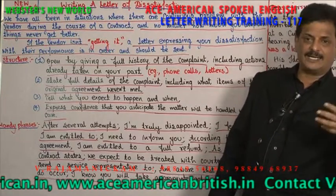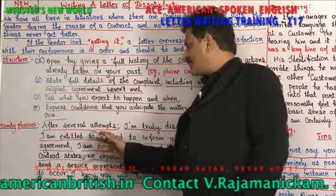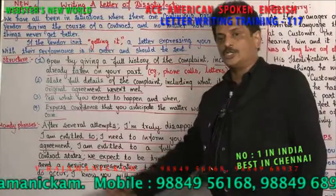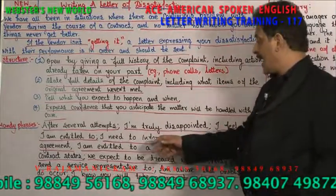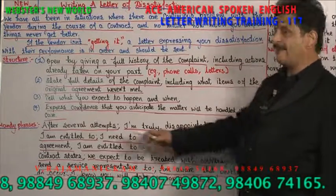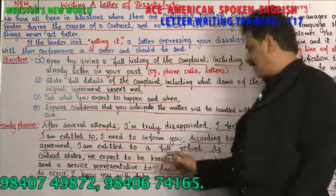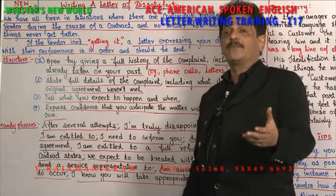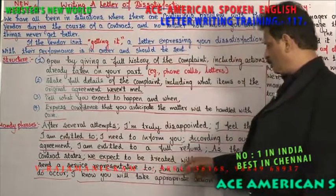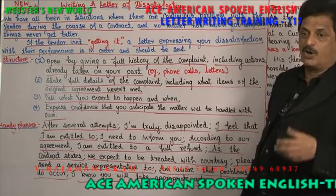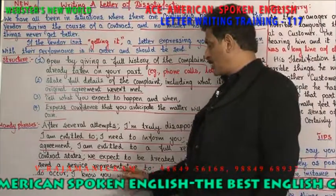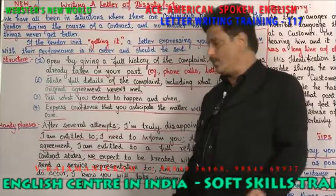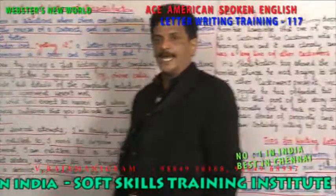At the end of the letter, express confidence that you anticipate the matter will be handled with care — that the seller or vendor will look after your complaint and try to rectify it. Handy phrases include: 'After several attempts, I am truly disappointed with the service.' 'I feel that I am entitled to get better service.' 'I need to inform you that there is a problem.' 'According to our agreement, the service is not provided properly.' 'I am entitled to a full refund.' 'As the contract states, if service is not good you have to give back the money.' 'We expect to be treated with courtesy.' 'Please send a service representative.' 'I am aware that problems do occur, but this is too much.' 'I know you will take appropriate action.'